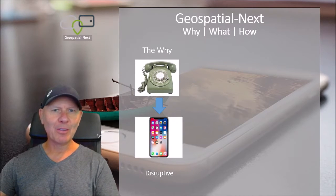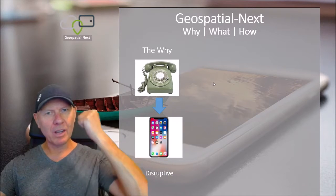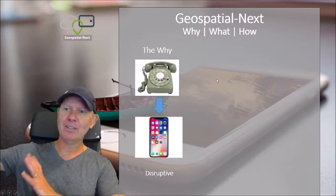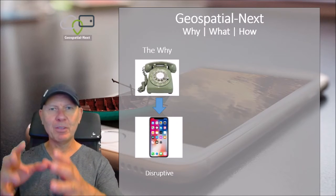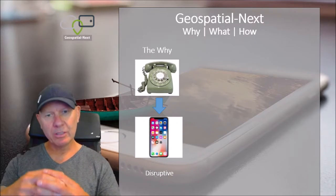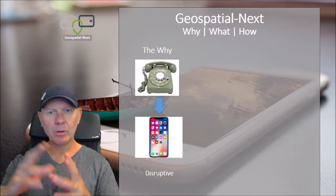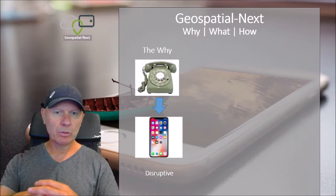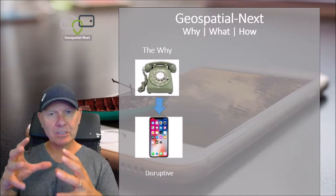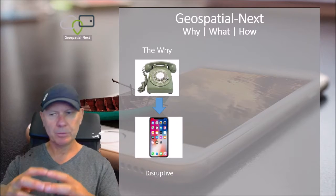I'm using a telephone image here, and some people looking at this will probably go, 'what's that thing?' — that's how we used to make telephone calls, with a wire, walking around the house with extended wires. Then all of a sudden smartphones appeared in 2008, 2009, and that world changed. We've now got many computers in our pockets, so it's not just a communication medium. What the smartphone brought to us was disruption — and that's exactly what Geospatial Next is focused on. We're in a period of disruption.